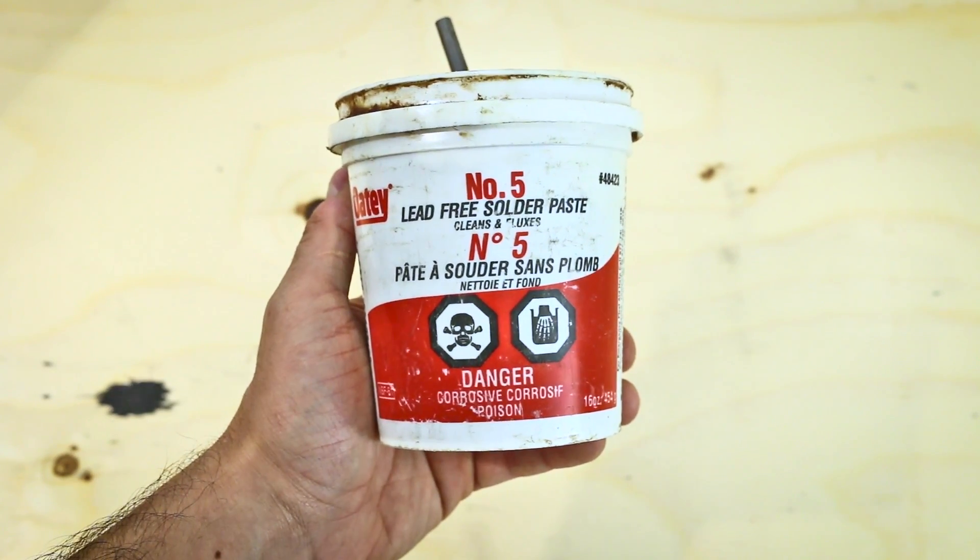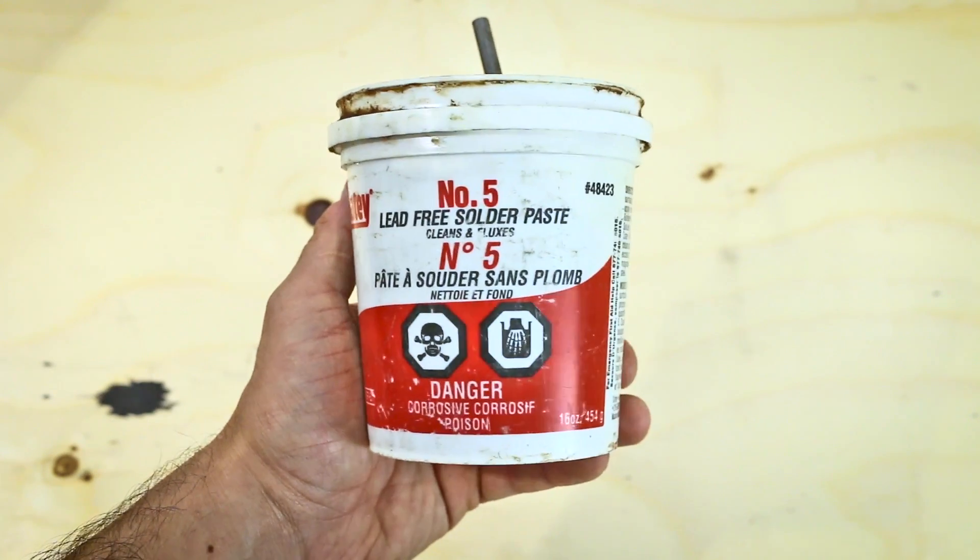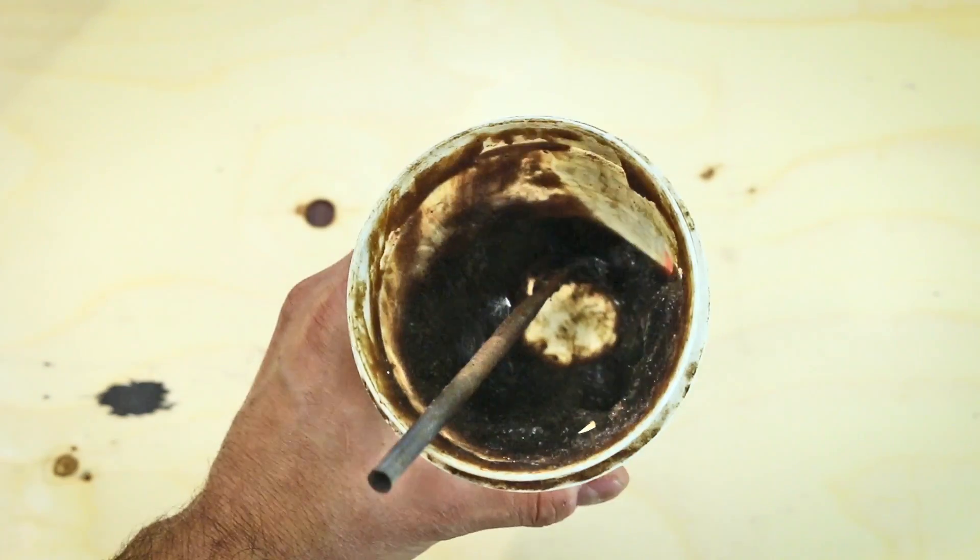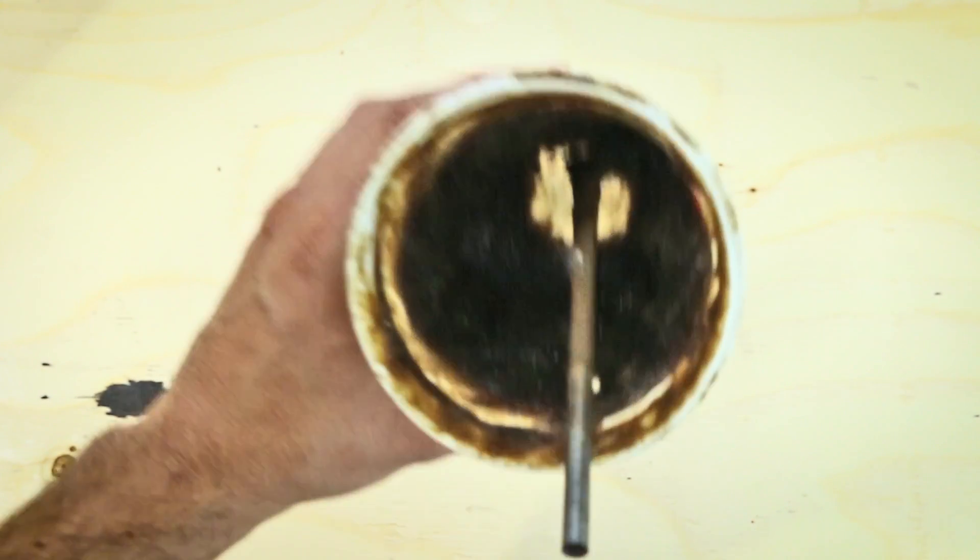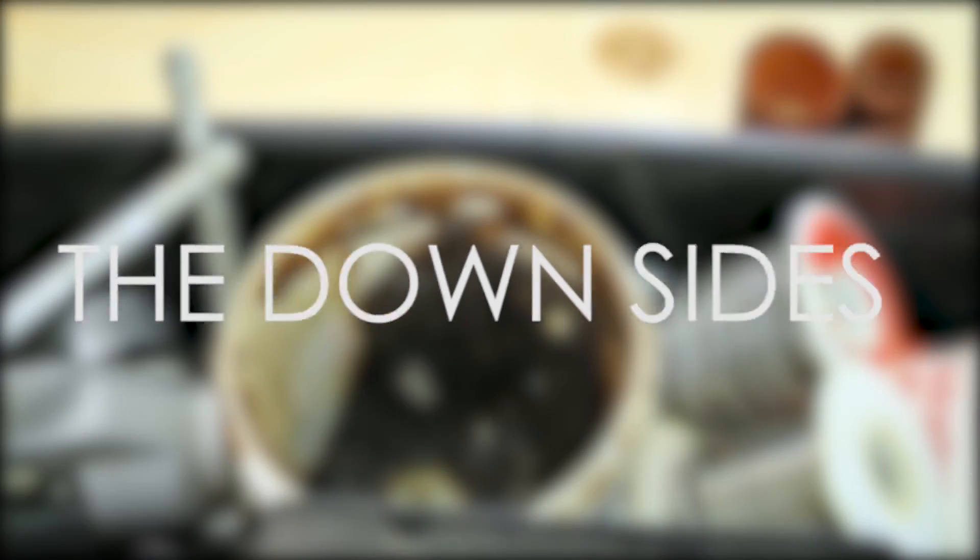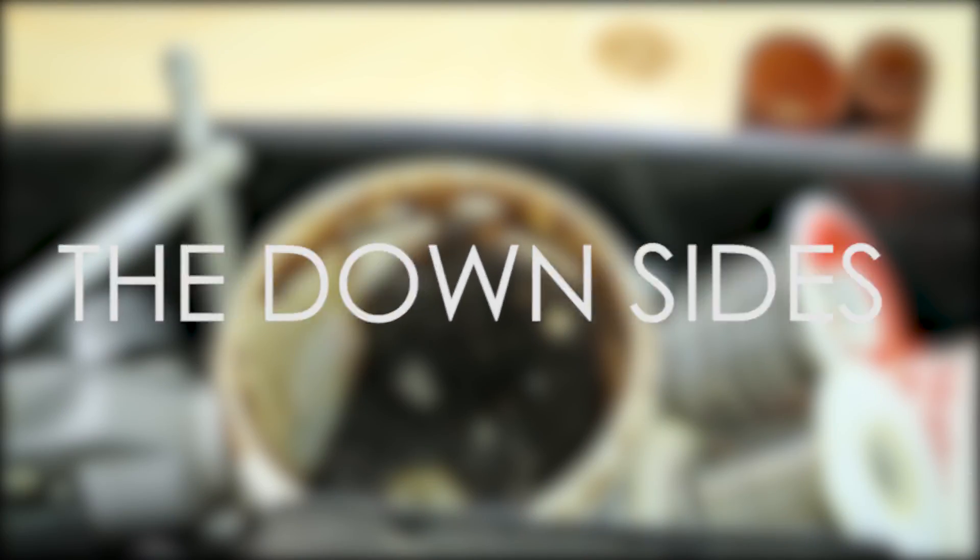Now, you could use the old-school method that's much used in the industry such as opening the jar's lid and using a cheap brush to get the flux, otherwise known as paste, onto your piping. Doing this in this fashion has many downsides to it.